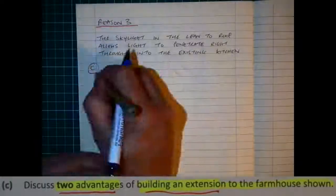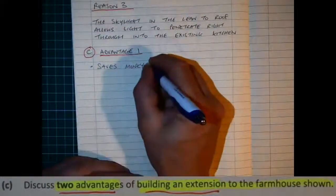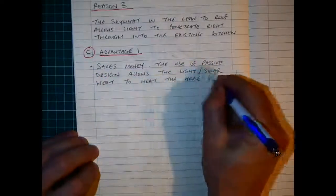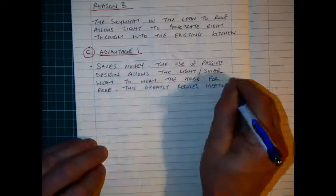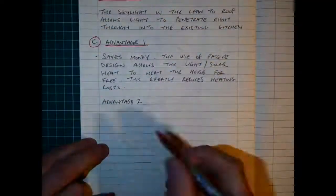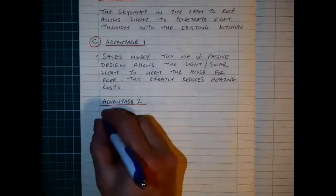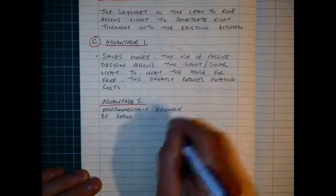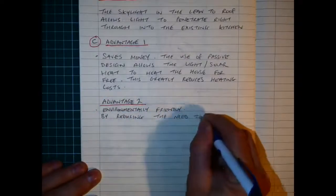My two advantages shown here: saving money, the use of passive design allows light and solar heat into the house which is free and greatly reduces heating costs. And environmentally friendly, it reduces the need to use fossil fuels, reduces CO2 emissions and climate change producing.